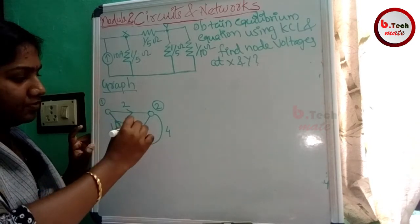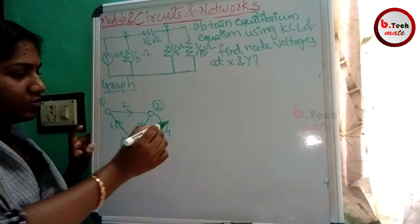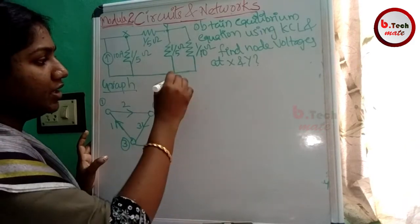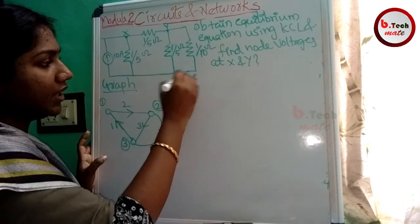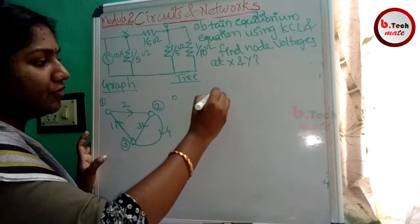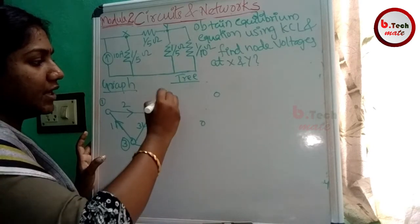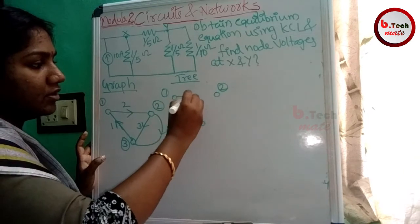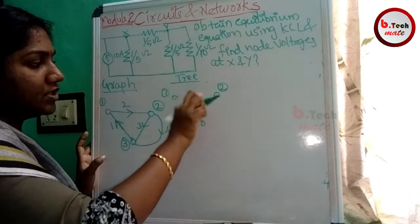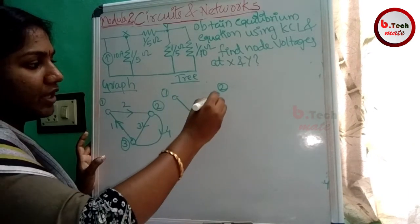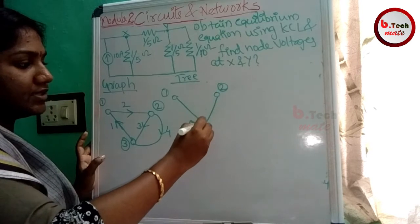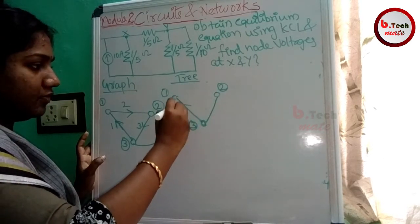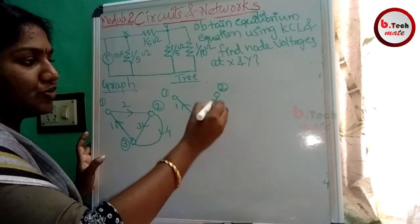Mark the nodes on the graph. The graph is a particular tree. If you want to see the graph, here we will see the twigs and the links — branches 1 and 3 and the corresponding links.